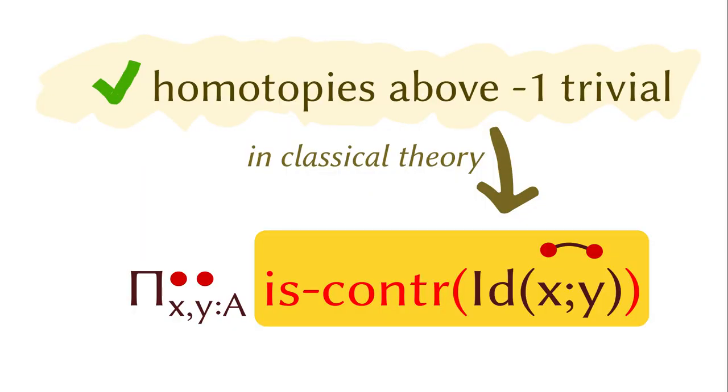To repeat, when the type has truncation level minus 1, which means its homotopies are all trivial starting from dimension 0, all of its identification types are contractible.